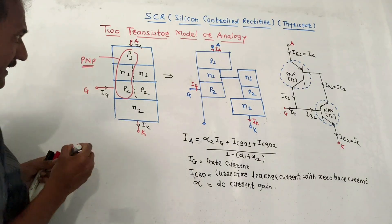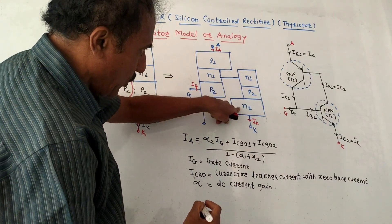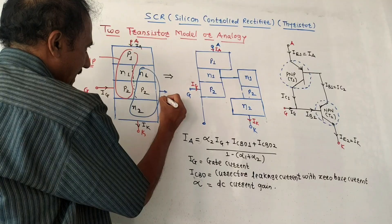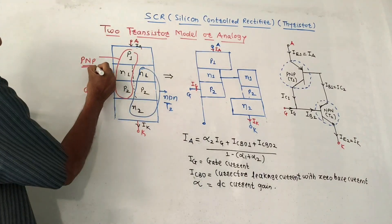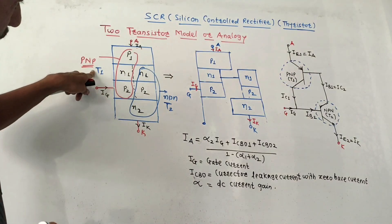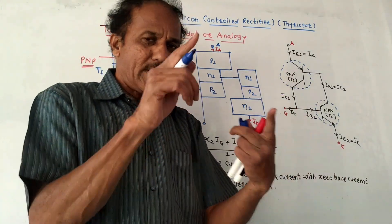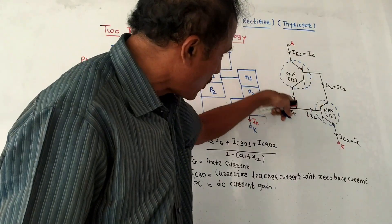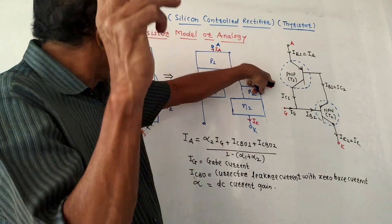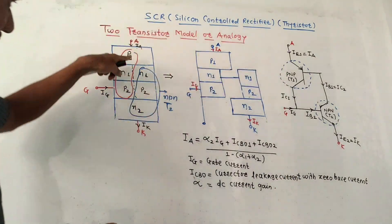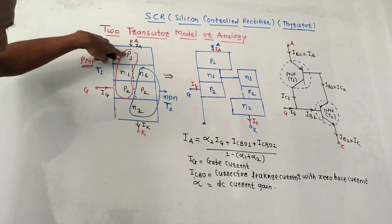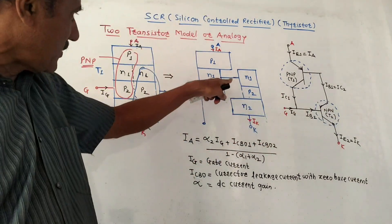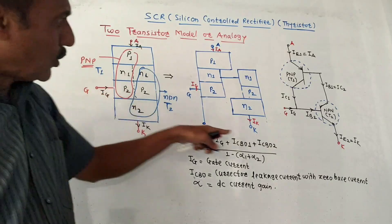Similarly, the remaining layers N1, P2, and N2 form another transistor — an NPN transistor. The PNP transistor is denoted T1, formed by layers P1, N1, and P2. The NPN transistor is denoted T2, formed by layers N1, P2, and N2. So we can consider the SCR as two transistors — one PNP and one NPN — connected in cascade. This is called the two-transistor model of the SCR.